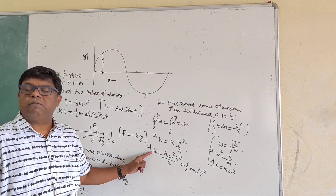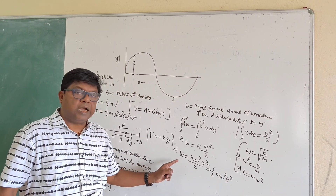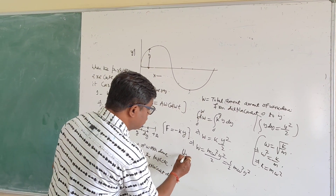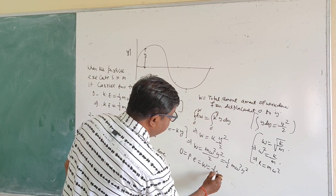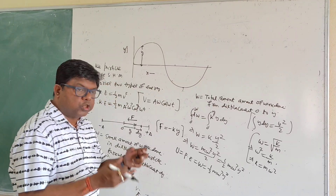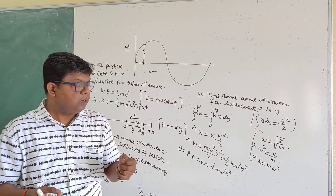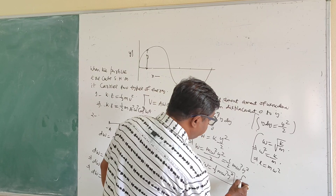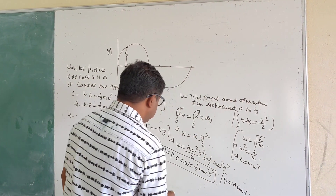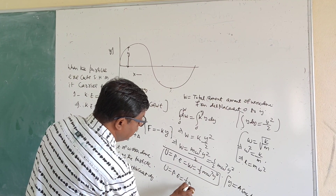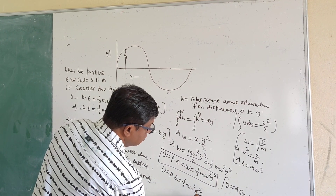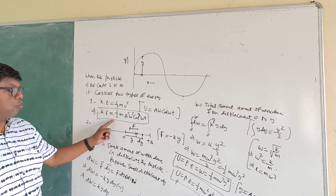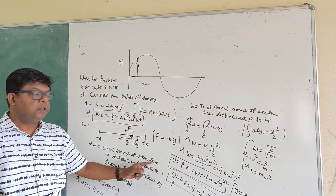This work done displacing the particle from 0 to displacement y gets stored as potential energy. Hence, potential energy PE = ½mω²y². Since y = A sin(ωt), the potential energy = ½mω²A²sin²(ωt). This is the expression for the potential energy of the particle executing SHM.